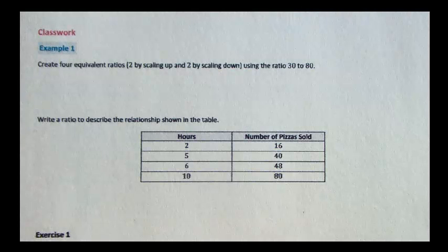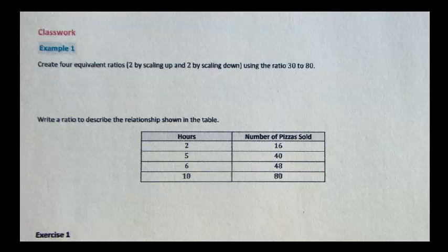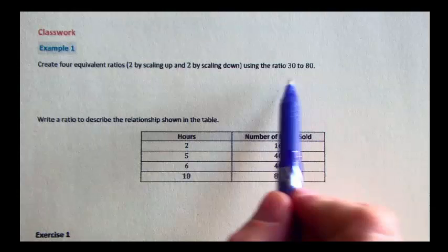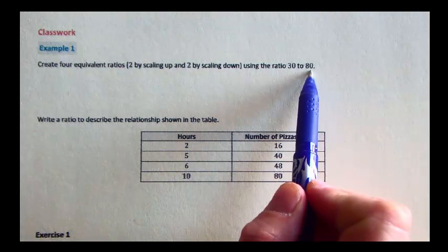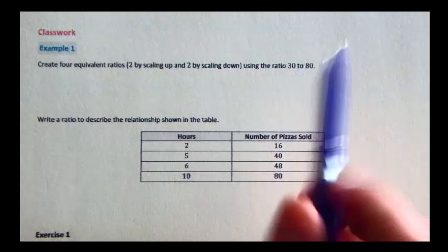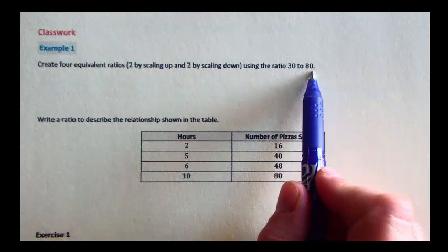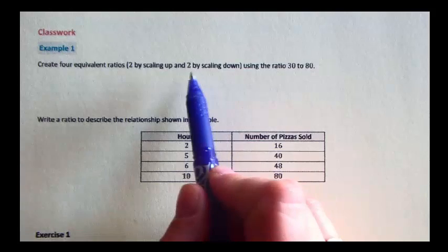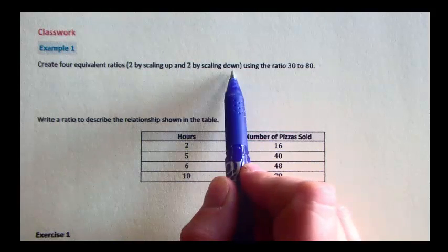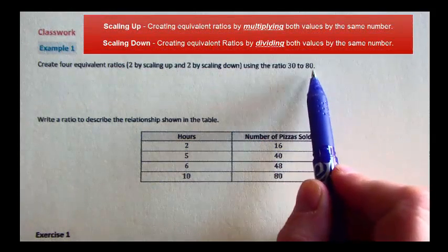In this example, we're going to start comparing ratios using ratio tables. First, let's do a little practice. We're going to create four equivalent ratios using the ratio 30 to 80. Two of these we're going to be scaling up, making the numbers bigger. Two we're going to create by scaling down, making the numbers 30 and 80 smaller.